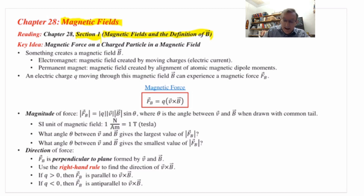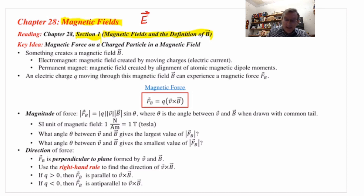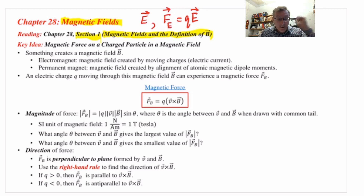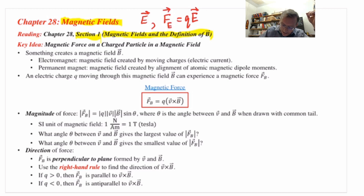We use the symbol E for the vector field known as an electric field, caused by merely the presence of electric charge. That's what creates electric field throughout all of space. If you bring in a particle with charge Q, you can get an electric force F_E from the electric field using the formula Q times E. Now we have a new kind of field called the magnetic field. The symbol for magnetic field is capital B with an arrow.